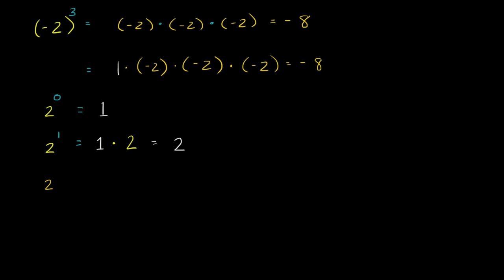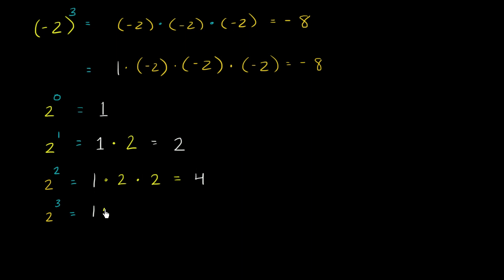We can continue the pattern. For 2 squared, we start with a 1 and multiply it by 2 two times: times 2 times 2, which equals 4. And for 2 to the 3rd power, we start with a 1 and multiply it by 2 three times: times 2 times 2 times 2, which gives us positive 8.